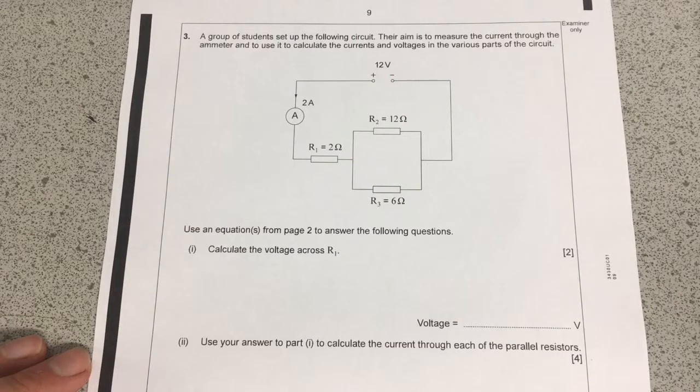This question is a GCSE physics question from unit 1. It's from the first part, they work on electric circuits, and it's all to do with basically Ohm's law and using the equation V equals IR.